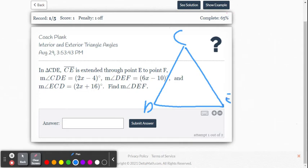And then it says extend CE so that it goes through point E and it goes to F. So that means it's going like this. And then down here is F. So now what angles do they give us? They give us that angle CDE is 2x minus 4. So CDE, that's this angle right here. That's the 2x minus 4.